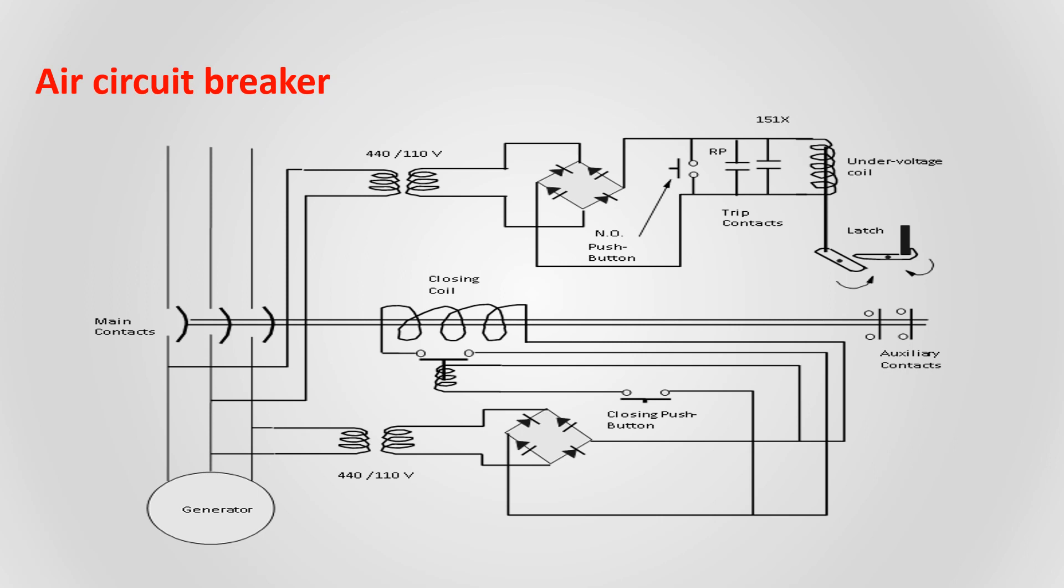This is the circuit diagram for an air circuit breaker. If you look at this diagram, the transformer converts 440V to 110V, and then using a rectifier AC to DC. Here everything is DC.